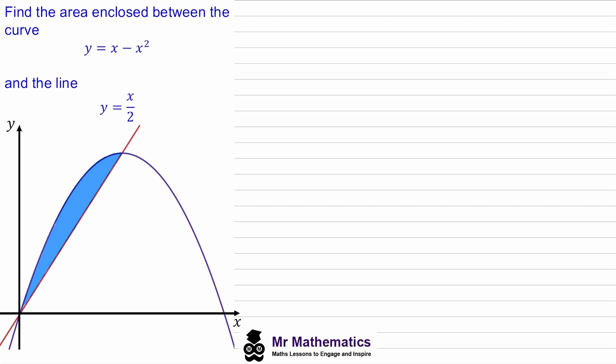The first thing we need to do is think about how we can combine the curve and the line to find this area. If we find the area under the curve between the origin and this point and then subtract from that the area under this line in red, then we'll get the area of this blue region.